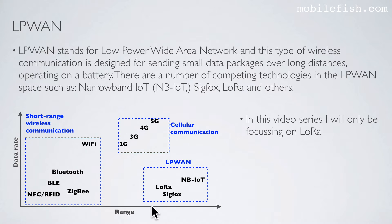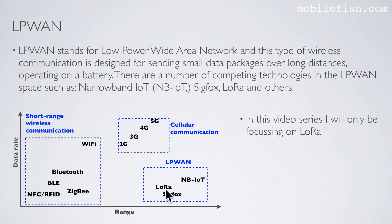As you can see in this picture, LPWAN is located in this area, cellular communication is located in this area, and short-range wireless communication is located in this area. LoRa is located here — as you can see, long distance and sending small data packages. In this video series I will only be focusing on LoRa.